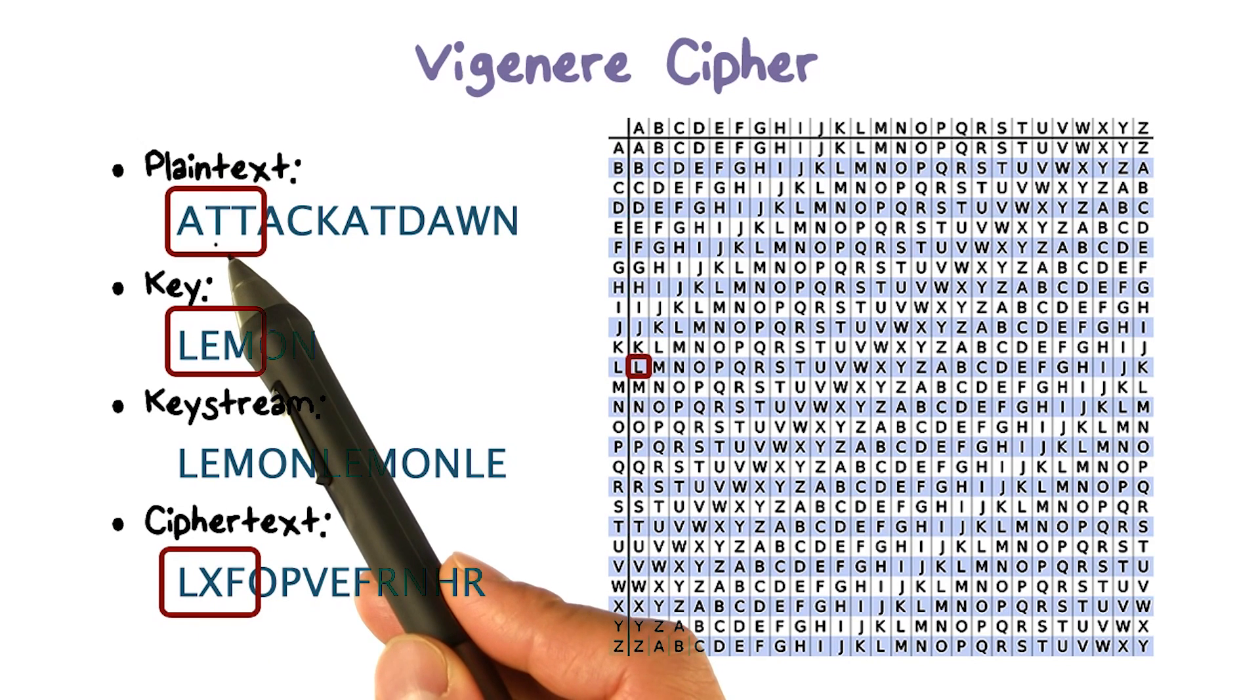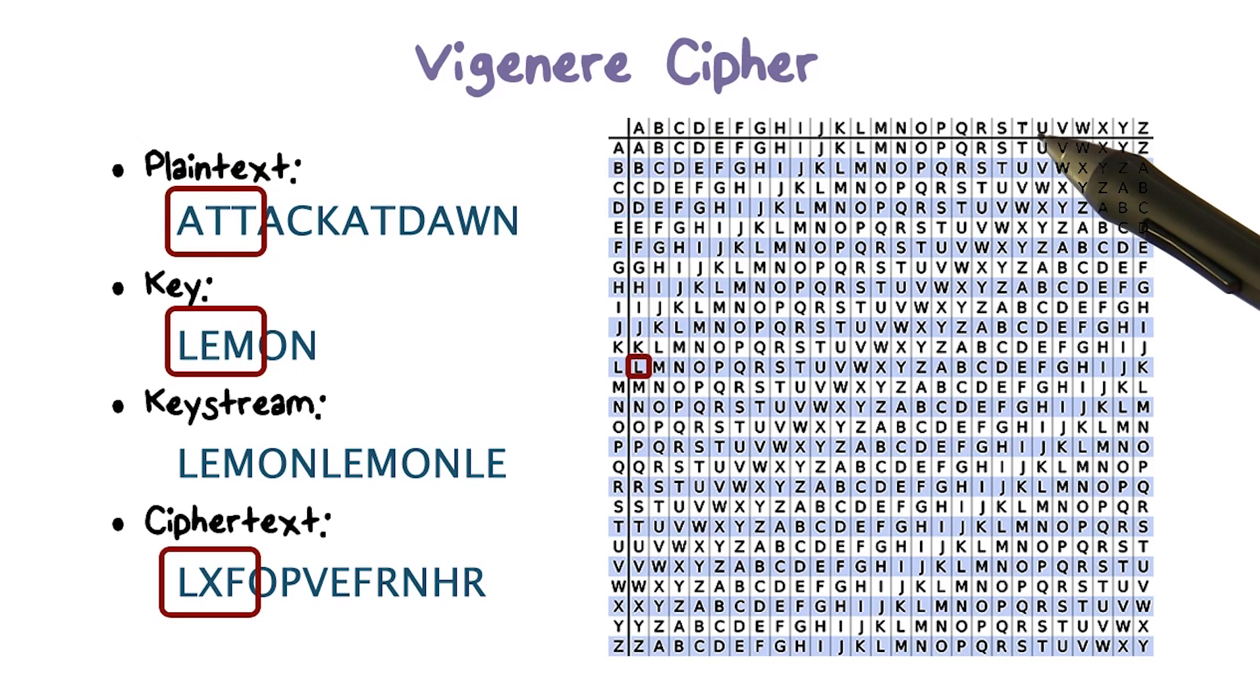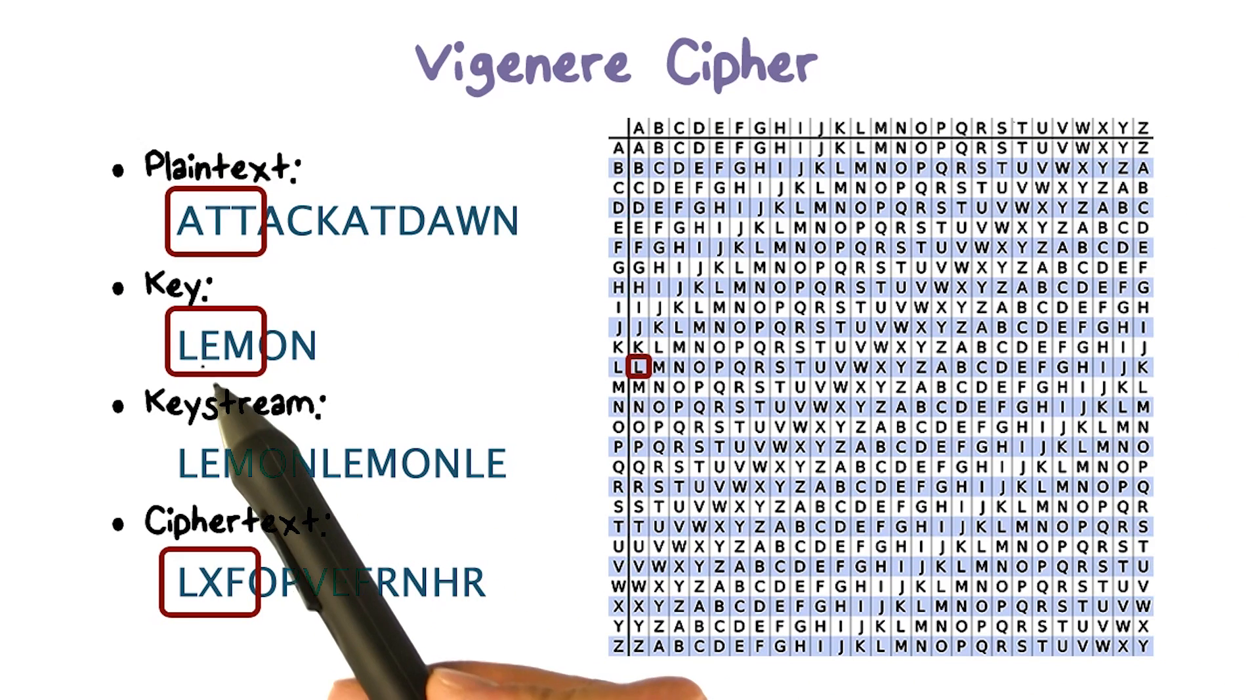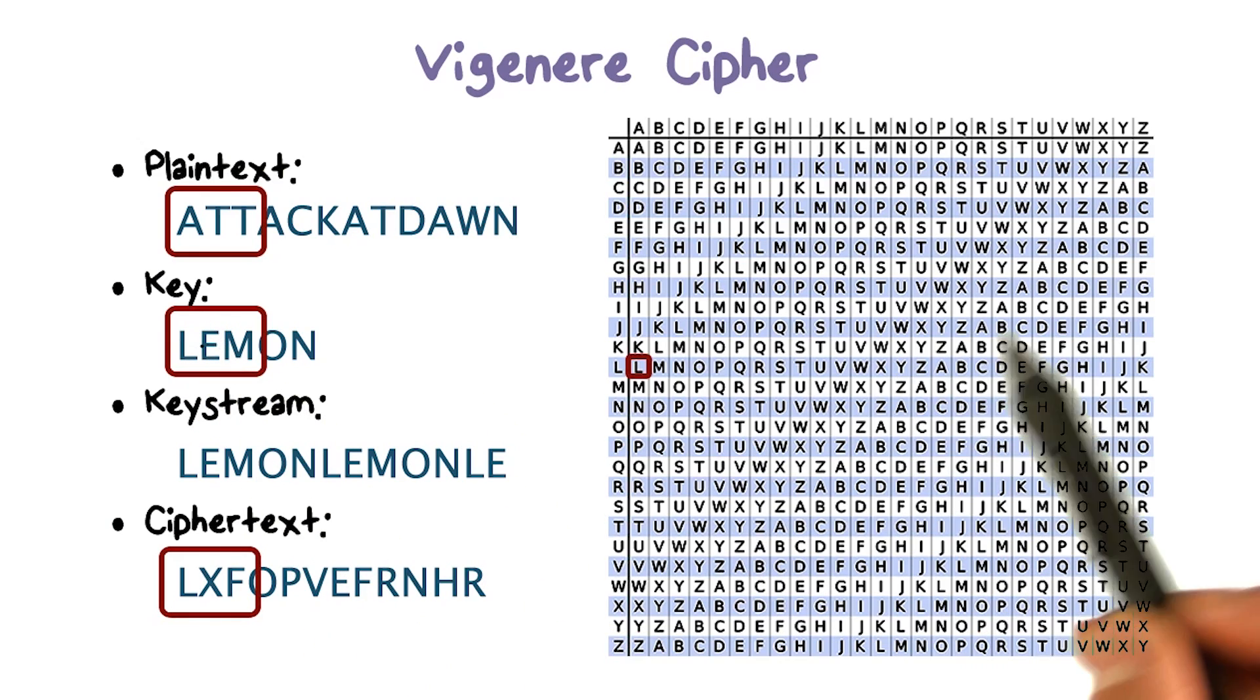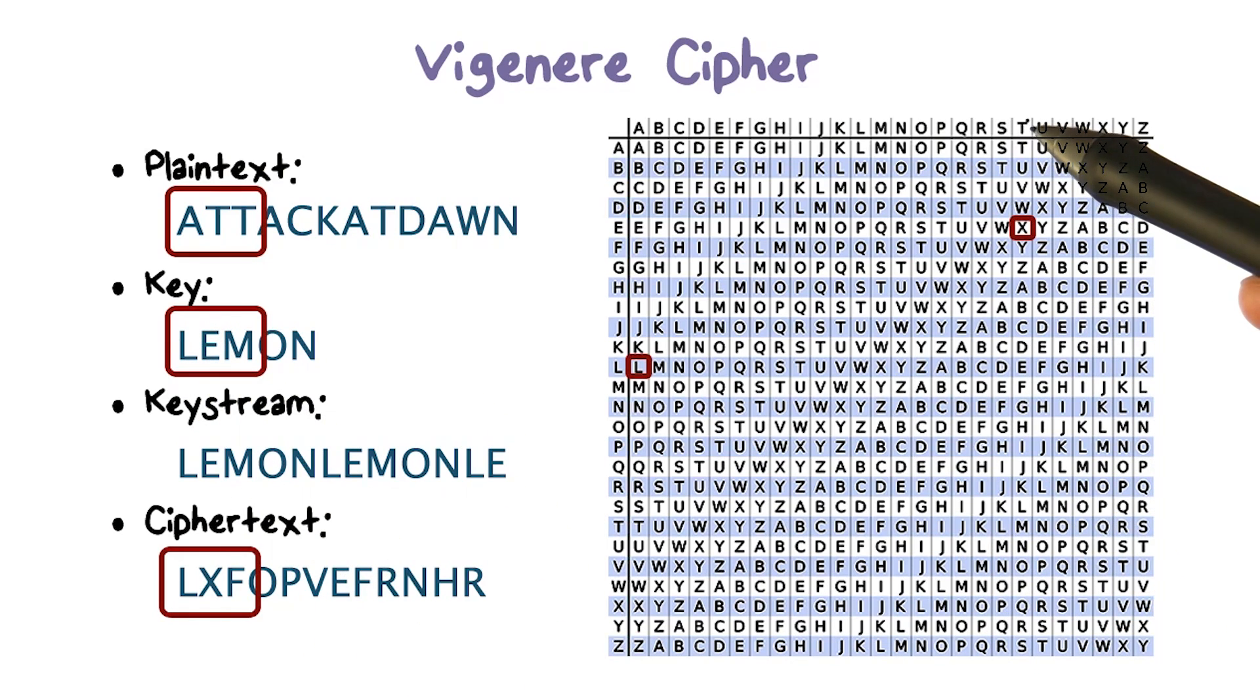The next plaintext letter is T, so we look at column T. And we use the letter in the key to look at the row to decide the mapping. The letter is E in the key, and so we look at column T and row E. And the mapping is X. This means that the ciphertext of T is X.